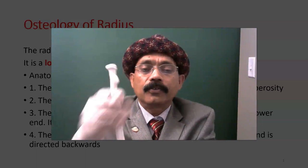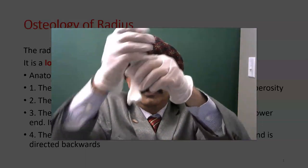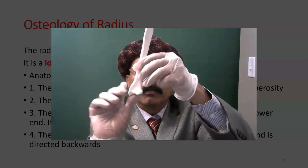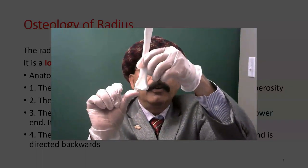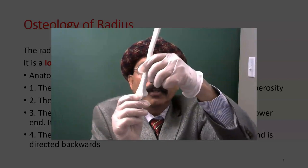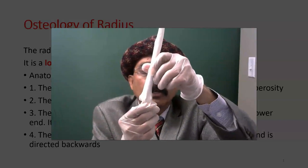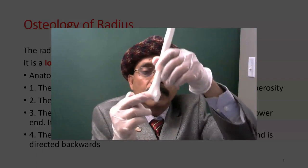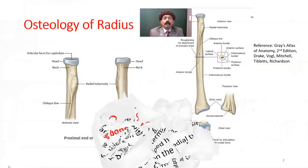This is the shaft. This is the lower end. The lower end has a lateral prolongation — this is the radial styloid process. Going to the dorsal or posterior part, we get the tubercle of Lister.